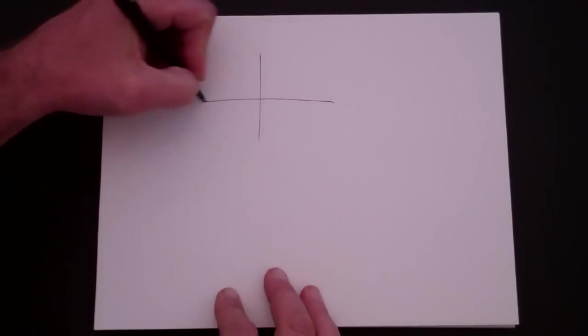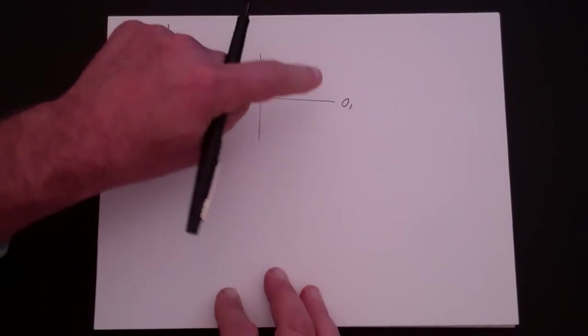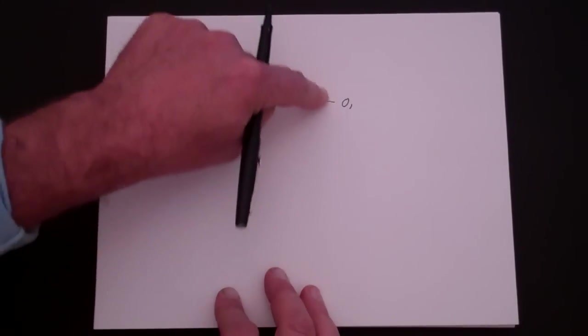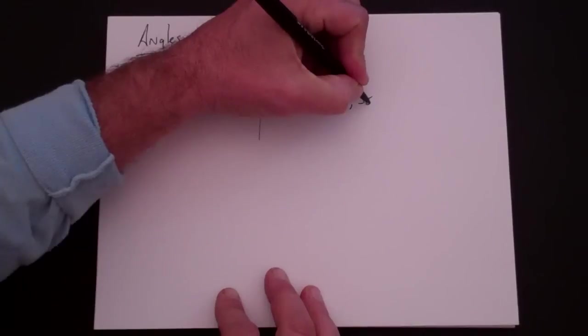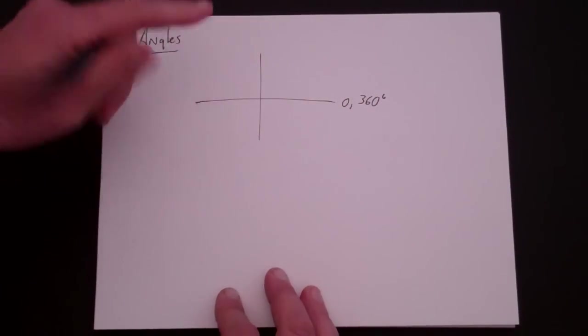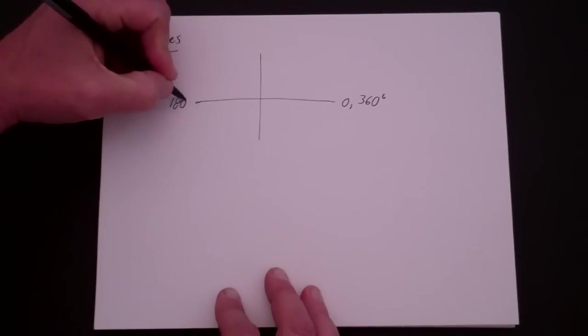So let's think of a circle. If you start here and you travel around a circle, then that's 360 degrees. And that's how we define actually degrees, is we start with the idea that one circle is 360 degrees, which means halfway is 180 degrees.